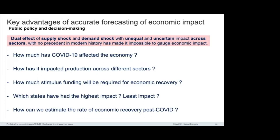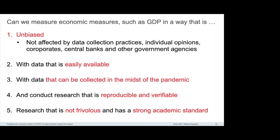One may ask: what's the advantage of accurate economic impact forecasting? It helps answer questions like how much has COVID-19 affected the economy, how much it has affected production across sectors, how much funding will be required, and which states had the highest impact. The utility of using nightlights is also readily apparent — these images aren't biased, they're easily available, they can be collected during a pandemic, and they're reproducible and verifiable.